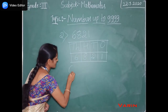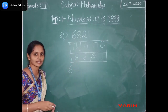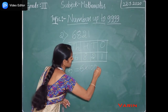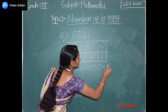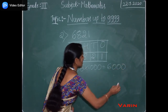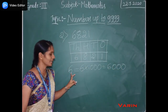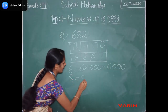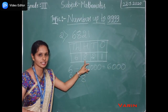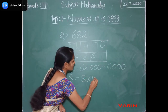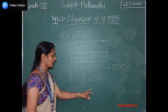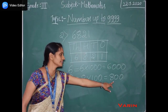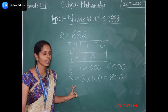6 is present in the thousands place. So we have to multiply it by 1000. We get 6000. 6000 is the place value of 6. And 8 is present in the hundreds place. So we have to multiply it by 100. We get 800. 800 is the place value of 8.